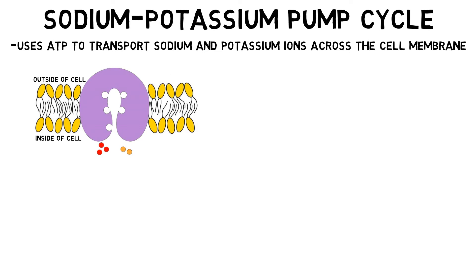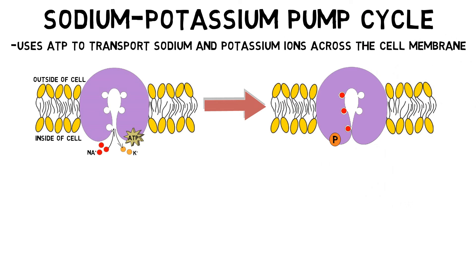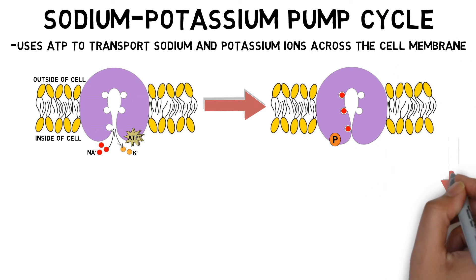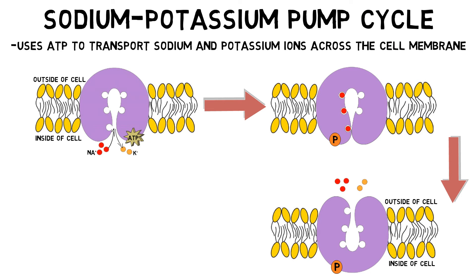All of the details of how this is achieved are not yet fully clear, but the general process involves the binding of ATP to the pump, which promotes the binding of three sodium ions and the release of two previously bound potassium ions. ATP is broken down and transfers a chemical group known as a phosphate group to the pump, which prompts the pump to undergo a conformational change, or a change in its shape. This causes the bound sodium ions to be released into the extracellular fluid.